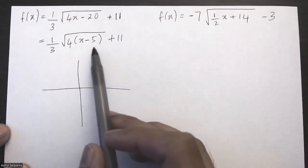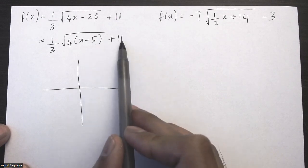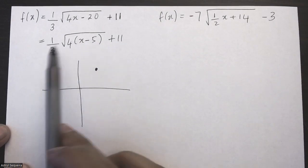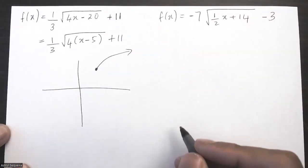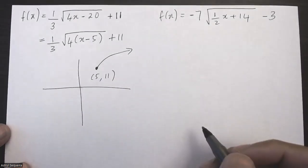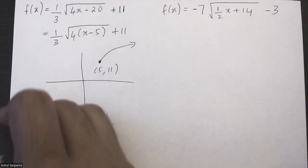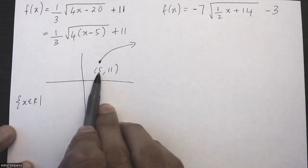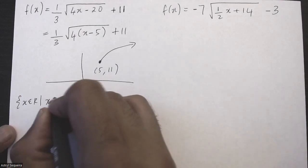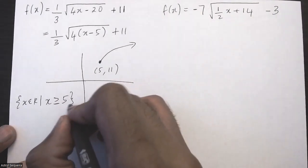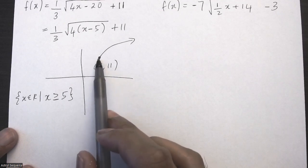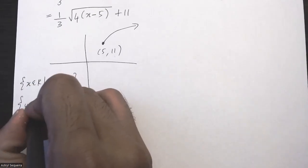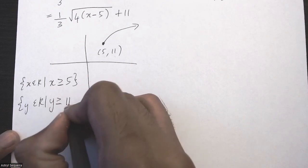Now that it's factored, the x value of the starting point will be positive 5 and the y value will be 11, so (5, 11) is my starting point. There are no reflections in this question. The domain is x is an element of all real numbers such that x is greater than or equal to 5. The range is y is an element of all real numbers such that y is greater than or equal to 11.